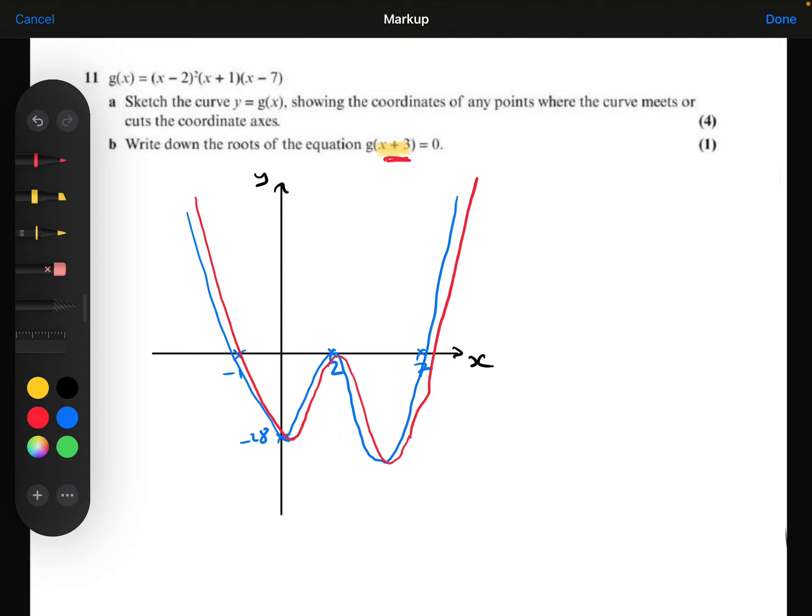So that's going to take this graph and move it 1, 2, 3 and be roughly there. So the new roots will be, well, the 7 take away the 3 is 4. The 2 take away the 3 is minus 1 now. And the minus 1 take away the 3 is minus 4. So the new roots are x equals 4, x equals minus 1, or x equals minus 4.